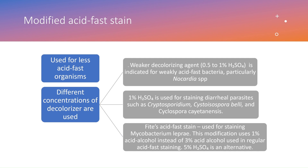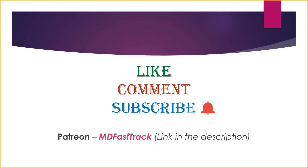In summary, the modified acid-fast stain uses 1% acid instead of 3% hydrochloric acid used in the original acid-fast stain, or 5% sulfuric acid instead of 20%. Only the decolorizer concentration changes. Thank you for listening — if you found this video helpful, please like and subscribe to the channel and click the bell icon for notifications. Patreon supporters can request lectures and get exclusive content.